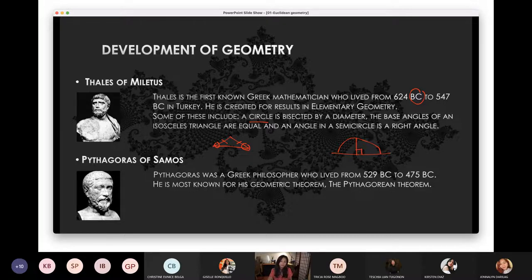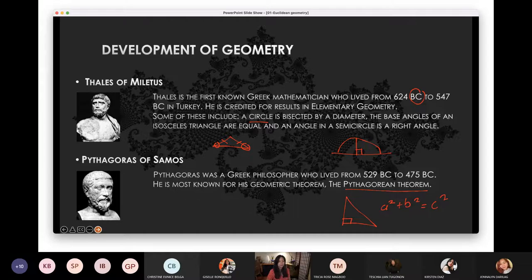Pythagoras of Samos, you're very familiar with this guy because he is the one who started the Pythagorean theorem. Pythagorean theorem only works with right triangles. The formula is a squared plus b squared is equal to c squared. So yeah, that's Pythagoras where we got the Pythagorean theorem.